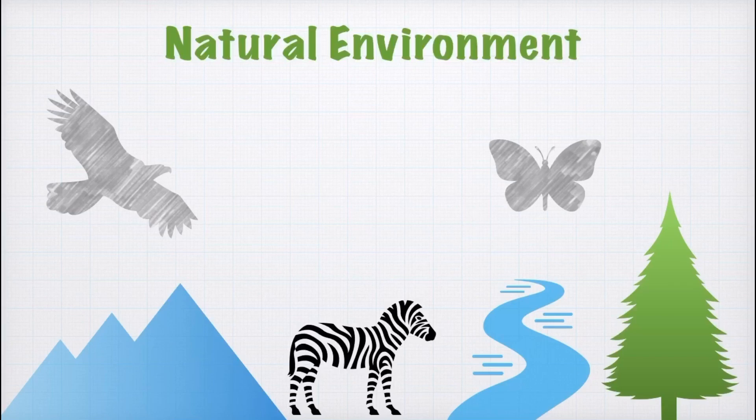For example, a chair is made by humans out of wood, but a mountain or a bird is not made by humans. Also, I want to highlight that natural environment can be biotic or abiotic, which we will discuss in detail in the later slides.